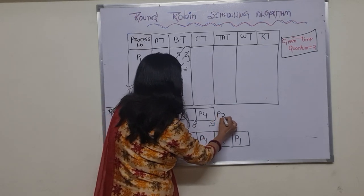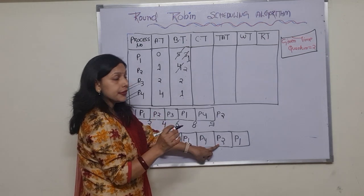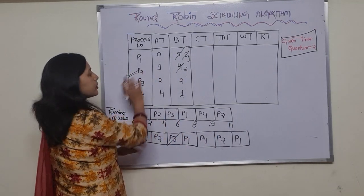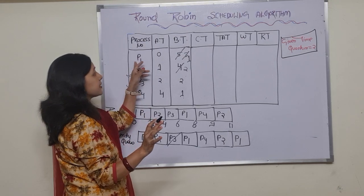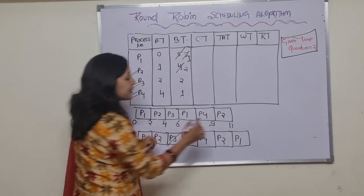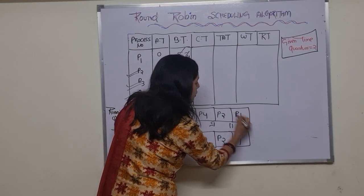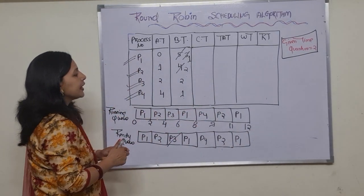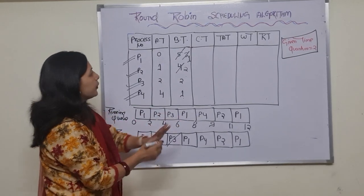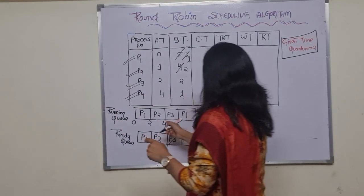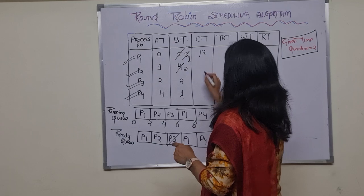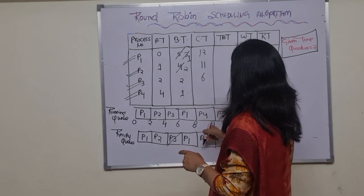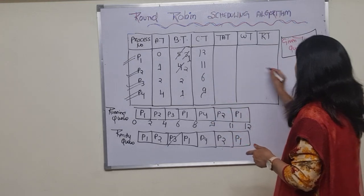Now P2 gets the CPU with 2 remaining units of time, completing at time 11. P2 is fully executed. Then P1 gets the CPU with 1 remaining unit, completing at time 12. So the completion times are: P1 = 12, P2 = 11, P3 = 6, P4 = 9.